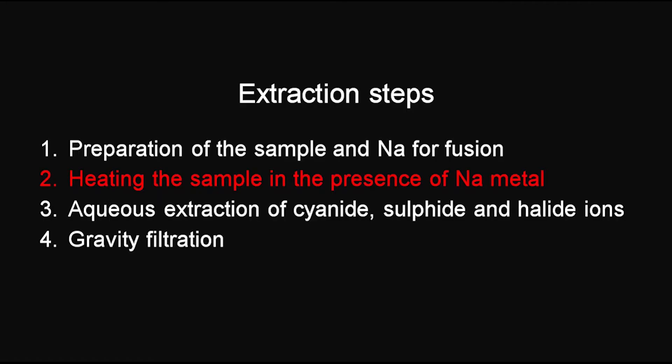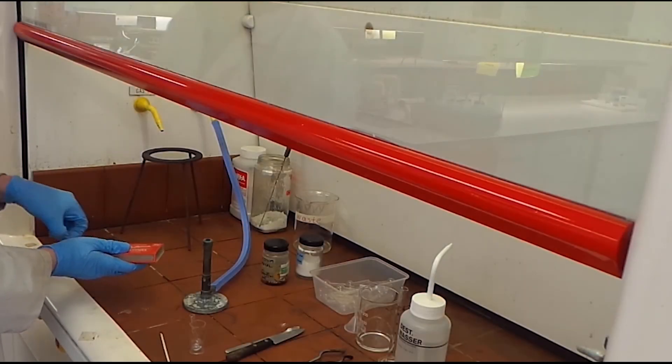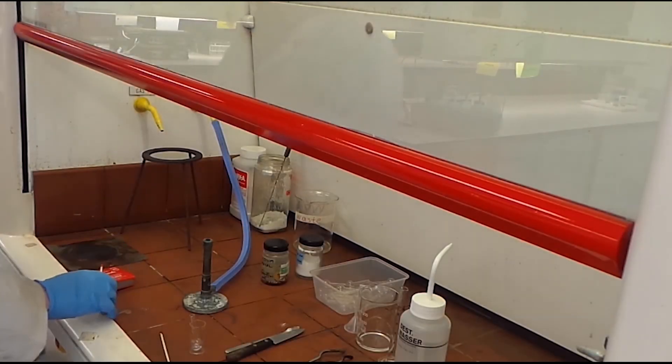After preparing the sodium and your sample in the ignition tube, the tube needs to be heated. After carefully turning on the Bunsen burner, remove any unnecessary items from around the Bunsen burner. Be sure to have your beaker of water close by.